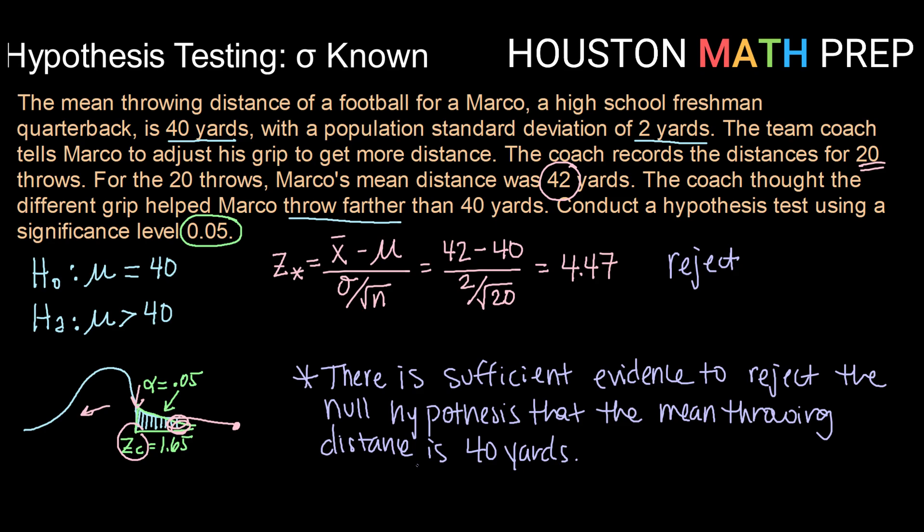Now, it is up to the reader to understand that that means we can probably support the claim that the mean distance of 42 yards is, in fact, not a fluke. It is probably the case that the coach's adjustment of the grip did help Marco increase his mean throwing distance. But in statistics, we never, ever accept an alternative hypothesis. All we can do is reject the null hypothesis that the mean throwing distance is still 40 yards.